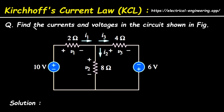Question: find the currents and voltages in the circuit shown in figure. For this circuit, we have to determine all the currents and voltages — that means we have to determine I1, I2 and I3, and V1, V2 and V3.